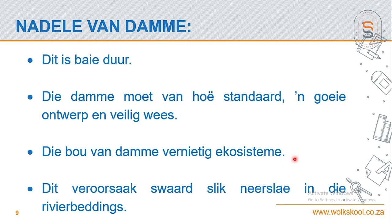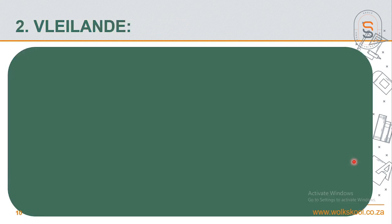Een van die dinge waaroor ekoloë veral baie ontsteld is as hulle praat oor 'n nuwe dam bou, is dat jy al die ekosisteme rondom die rivier verander en dit uiteindelik vernietig. Dit is veral waar ons sien dat biodiversiteit redelik afneem - dit is 'n groot probleem as ons ekosisteme vernietig. Dan veroorsaak dit ook slikneerslag in rivierbeddinge as gevolg van die grond wat saam met vloed water afkom, wat die rivier uiteindelik vlakker maak.